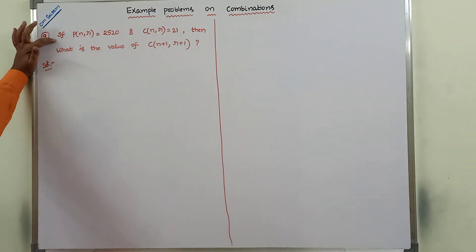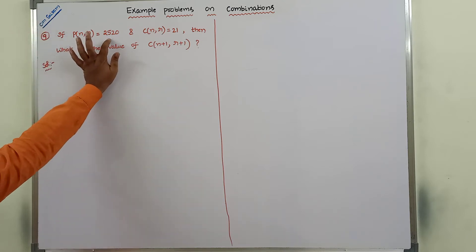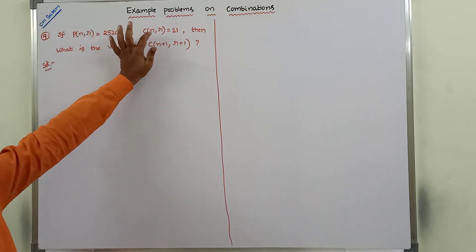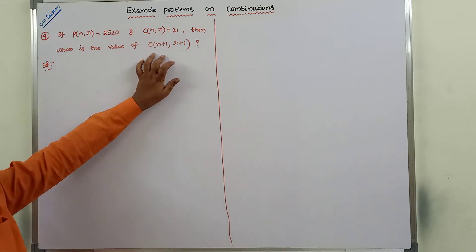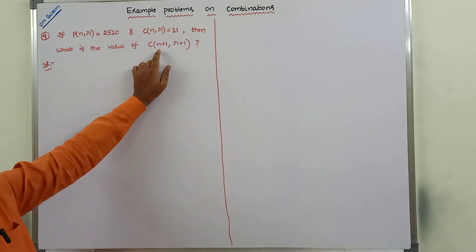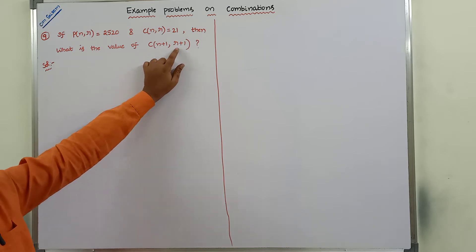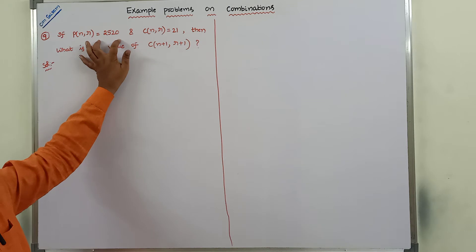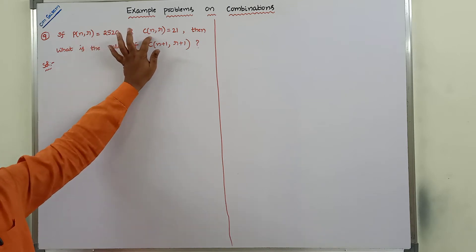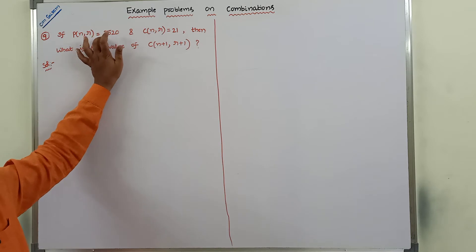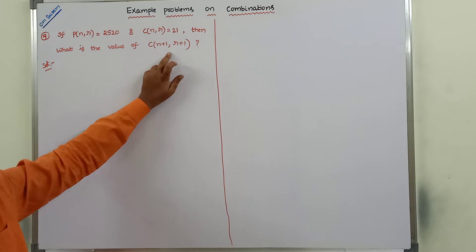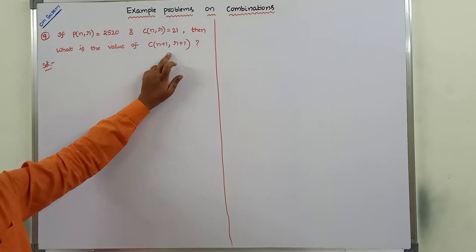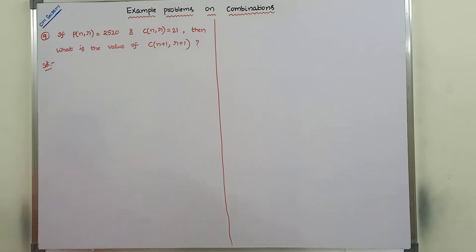If P(n, r) is equal to 2520 and C(n, r) is equal to 21, then what is the value of C(n+1, r+1)? We have to find out the n value and r value using P(n, r) and C(n, r), then substitute into C(n+1, r+1) to get the answer.